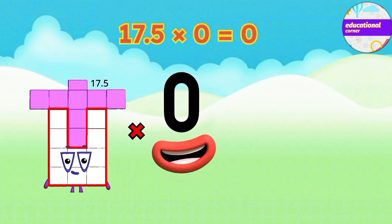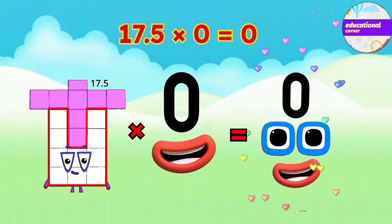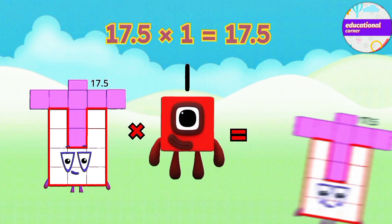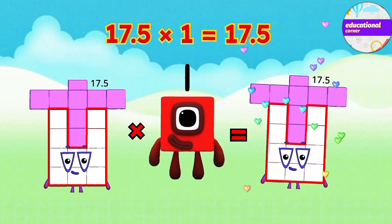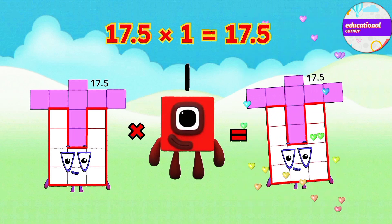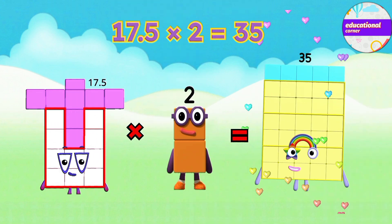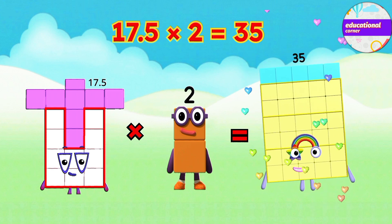17.5 multiplied by 0 equals 0. 17.5 multiplied by 1 equals 17.5. 17.5 multiplied by 2 equals 35.